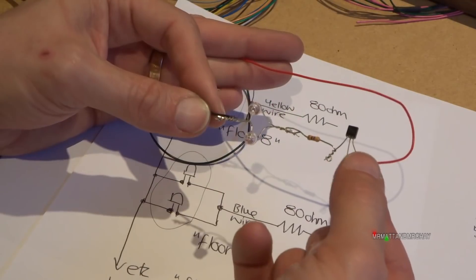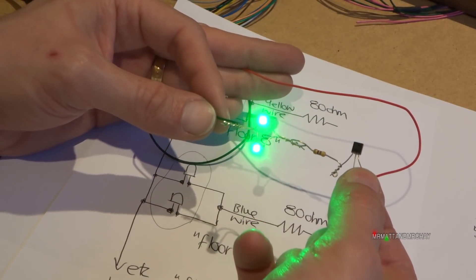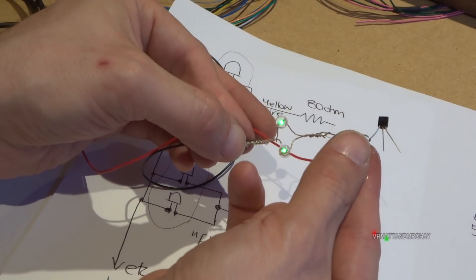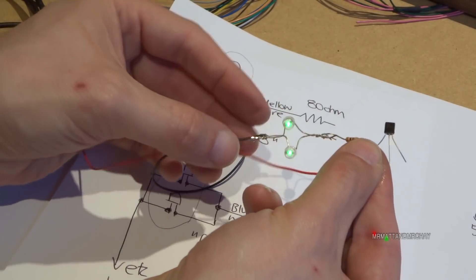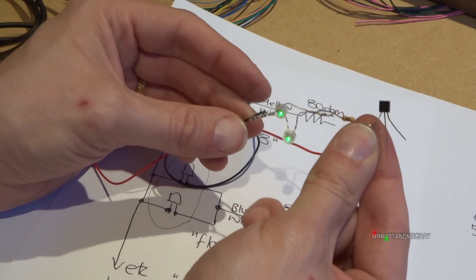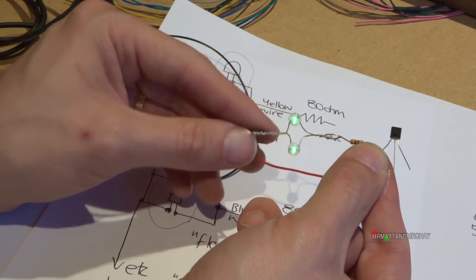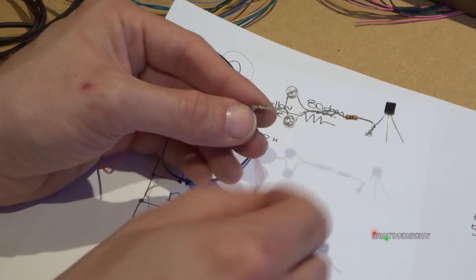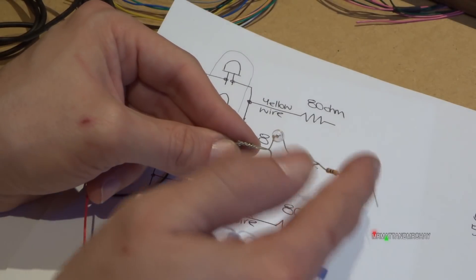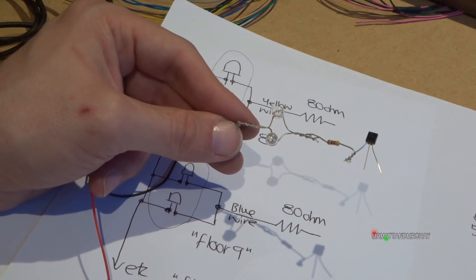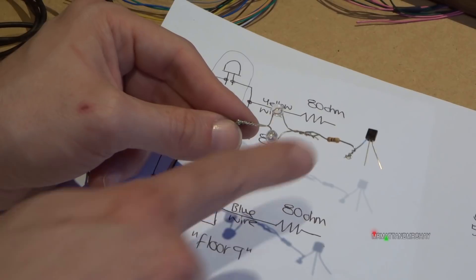Now if I were to do that without the transistor, touching from there to there, transistor's not part of the circuit, and that's all the current that can go through there. It's not much. So transistor is an amplifier. It takes the load away from the Arduino board and that's what I have to do now.